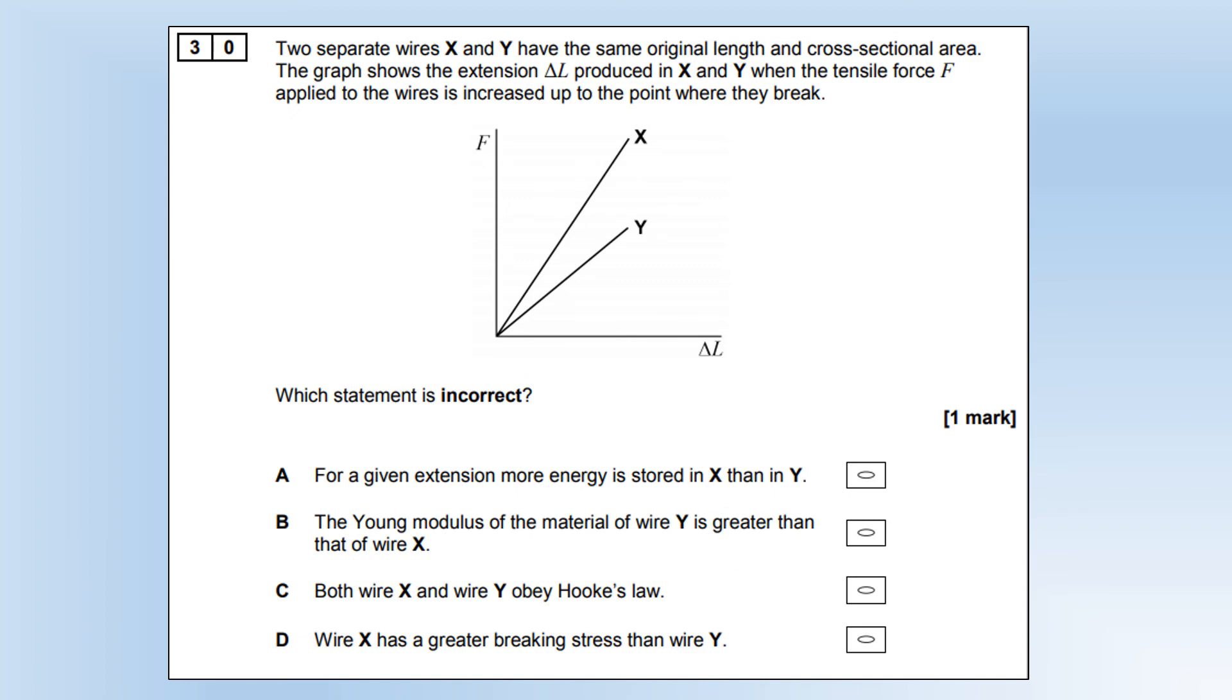Two separate wires, X and Y, have the same original length and cross-sectional area. The graph shows delta L on the X and Y when the same force is applied to both up until the point they break. Which statement is incorrect? For a given extension, more energy is stored in X than in Y. So we're comparing the areas under the graph, and you can see that's true. The young modulus of Y is greater than that of X. That, we can see, is not true. The gradient is lower, so its young modulus is lower. They both obey Hooke's law, that's fine. And X does have a greater breaking stress, so that's fine, too.